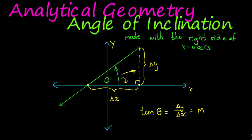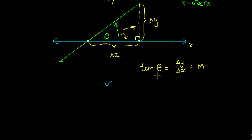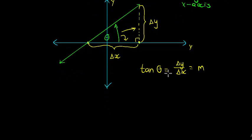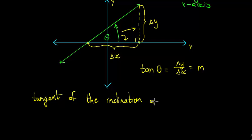In other words, tan of theta, and that comes from trig lessons. If you don't know what I mean by tan of theta, you'll have to refer back to those. But tan of theta is equal to the gradient. In other words, the tangent of the inclination angle is equal to the gradient.